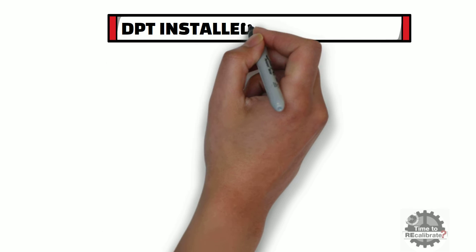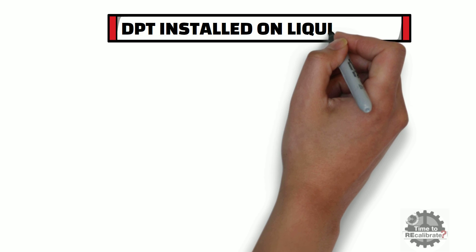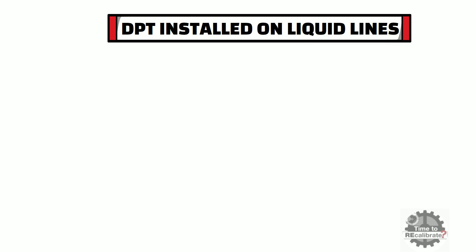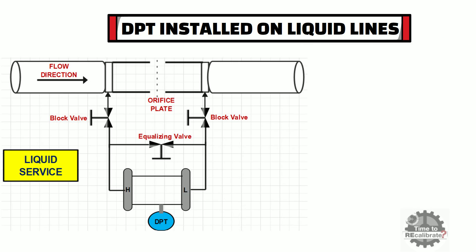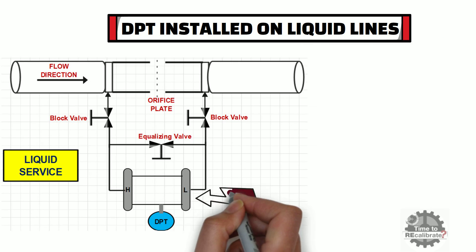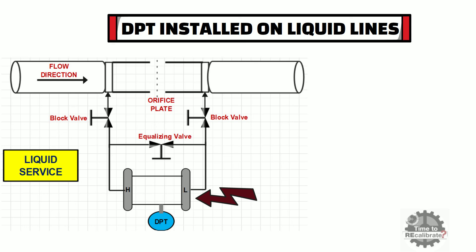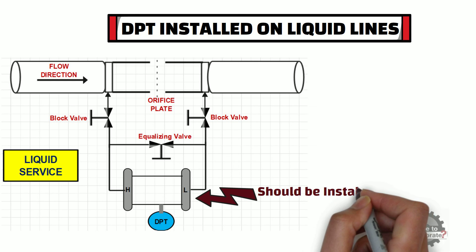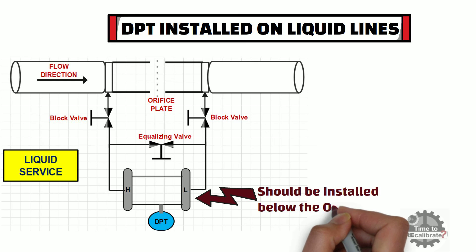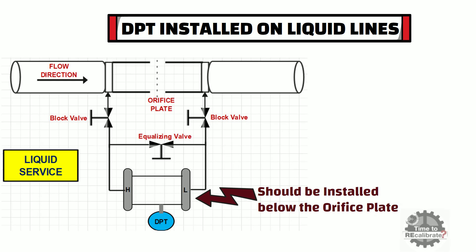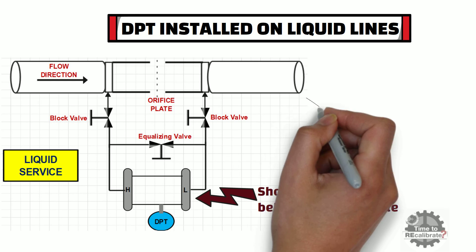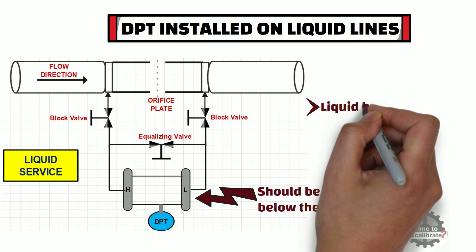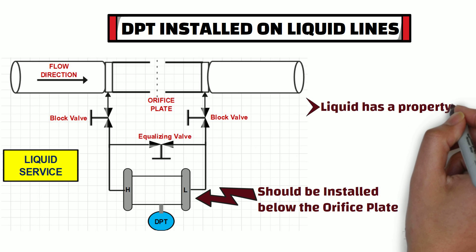First of all, let's start with the situation when a differential pressure transmitter is installed on liquid lines. As you can see from the diagram, for liquid lines, the DP transmitter should be installed below the orifice plate. The reason behind this is that liquids have a property of self-draining.